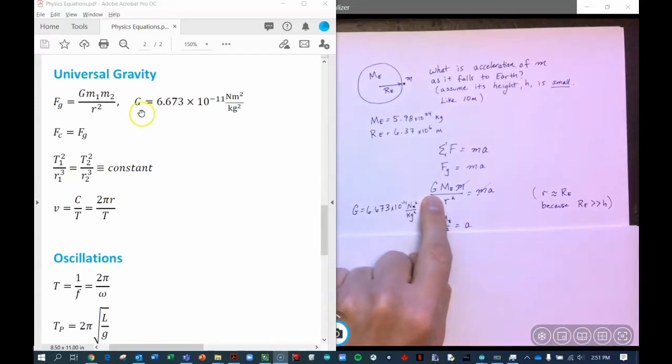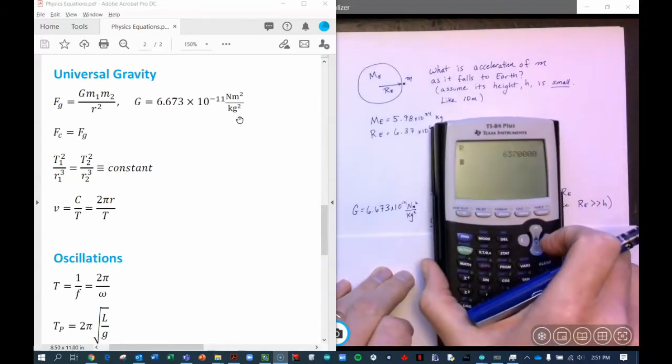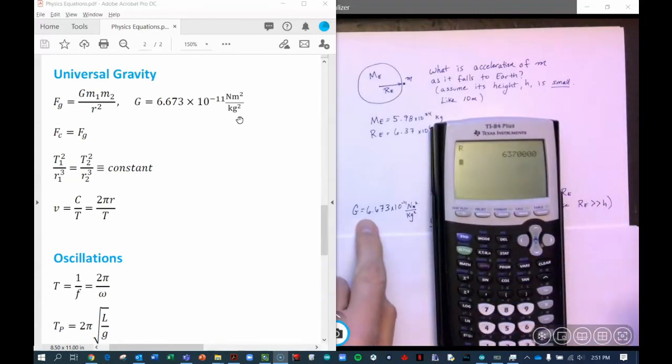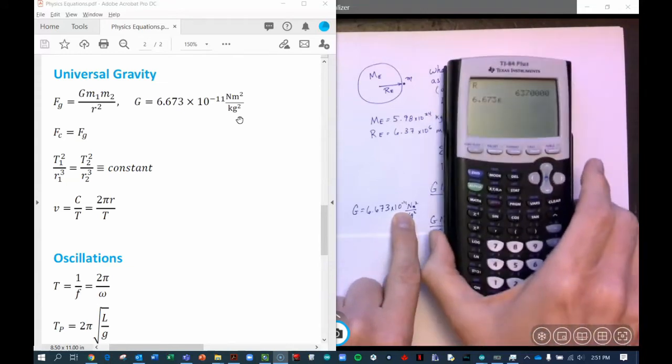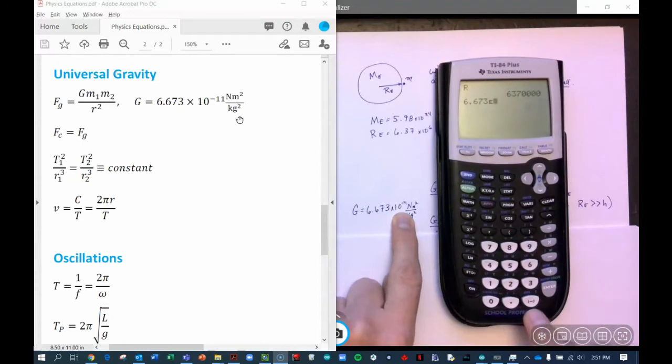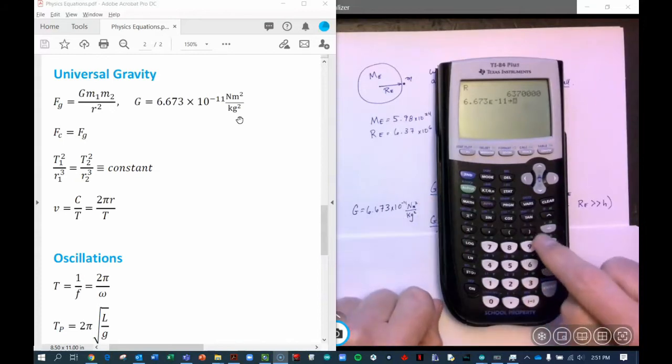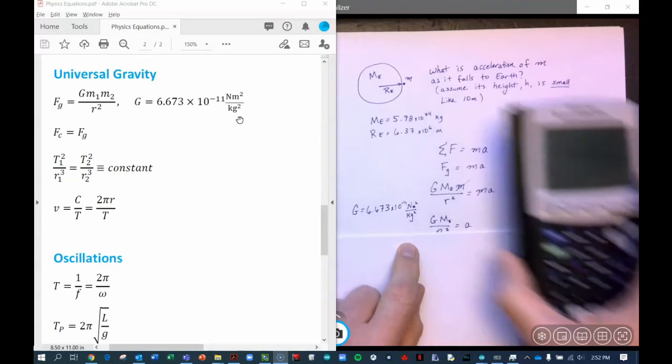G, as you see here in the equation sheet, is a very small number. It's a constant, gravitational constant. And I'm going to type that in and store that as G. 6.673 E minus, and notice it's the minus sign here, it's the negative rather than the minus. It's negative. So negative 11. So this is the thing you want. You hit store, and then alpha G. And G is stored over the tangent button.